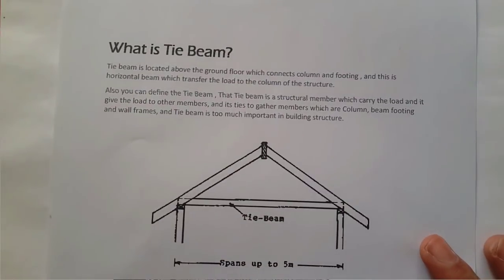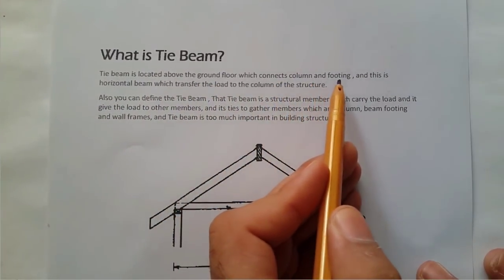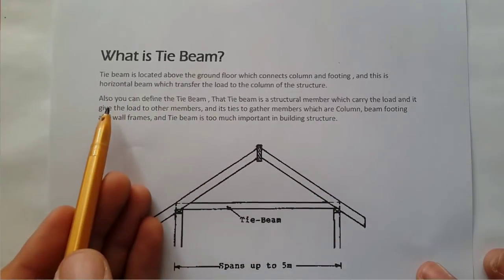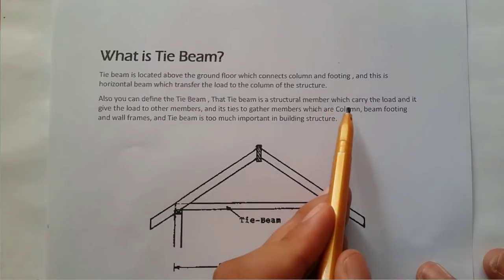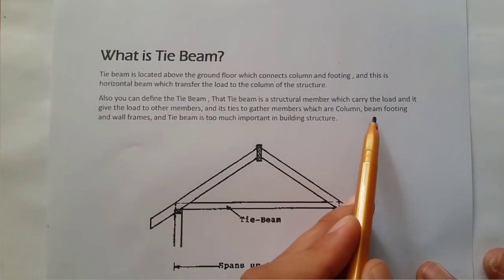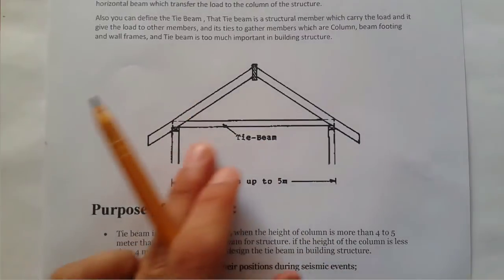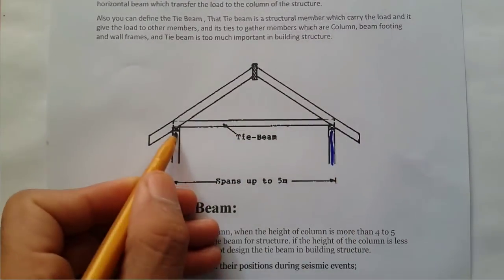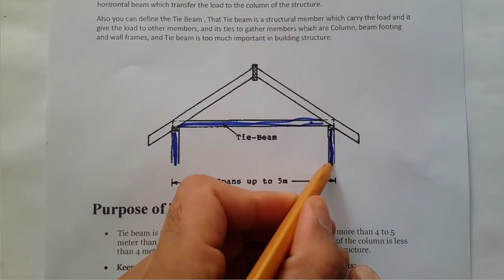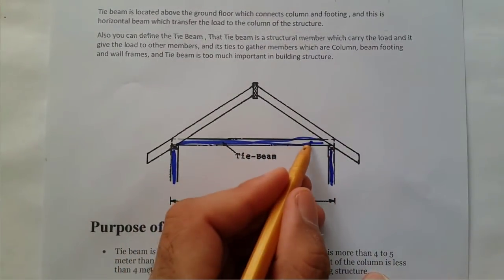Now, what is a tie beam? Tie beam is located above the ground floor and connects columns and footings. It is a horizontal beam which transfers the load to the column of the structure. We can also define tie beam as a structural member which carries the load and distributes it to other members. Tie beam ties together members which are columns, beams, footings, and wall frames. Tie beam is very important in building structures. As shown in the photo, these two are columns and this is called tie beam.